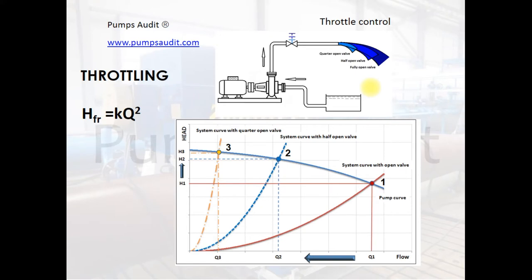Throttle control is the method of changing pump flow by increasing or decreasing the resistance of the pumping system. The resistance of the pumping system is regulated by the valve installed in the discharge pipeline. If we need to reduce the flow, we begin to close the valve. The pumping system curve changes its shape and gets steeper and steeper — we increase the coefficient of losses in this formula.